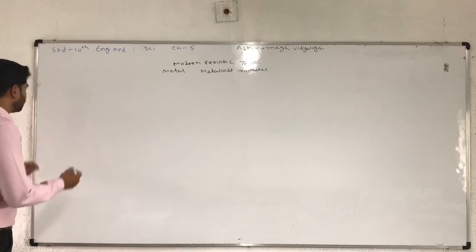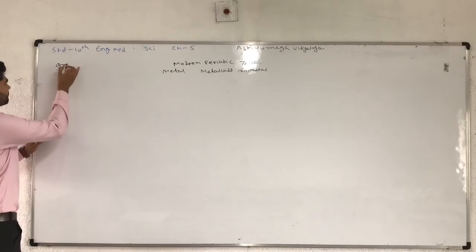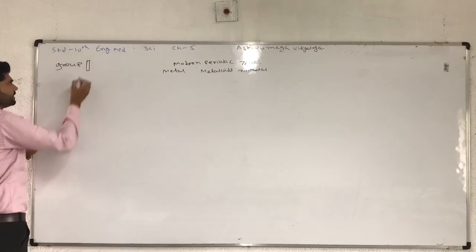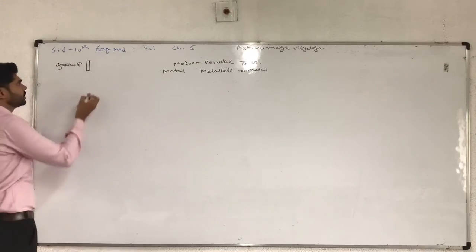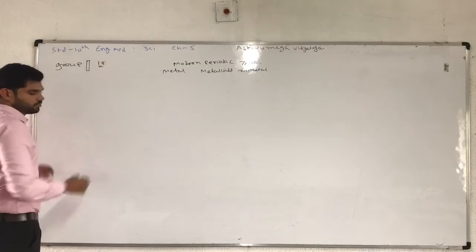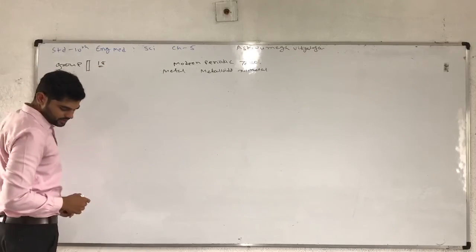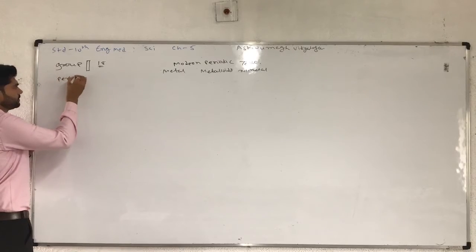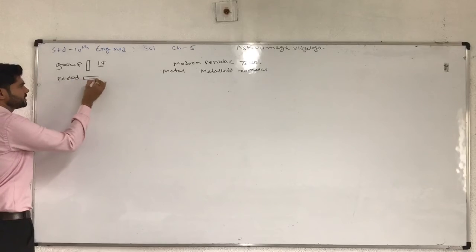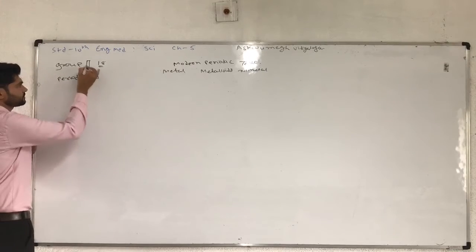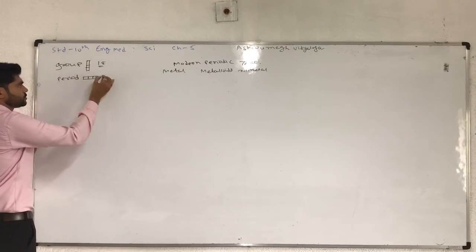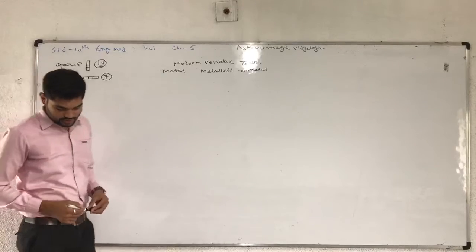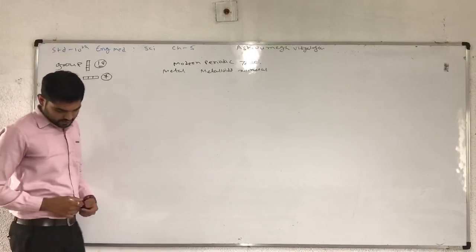Groups and horizontal lines are known as periods. There are eighteen groups and seven periods in the modern periodic table.